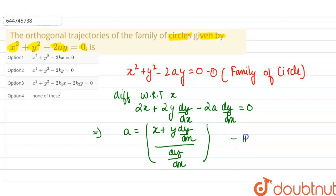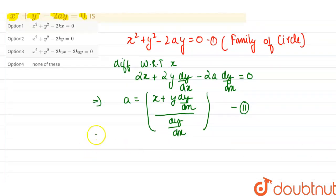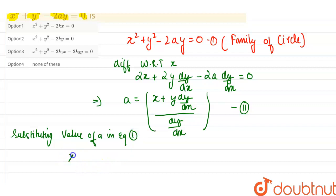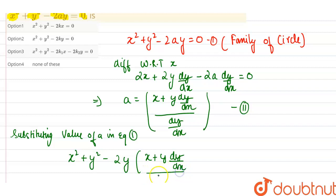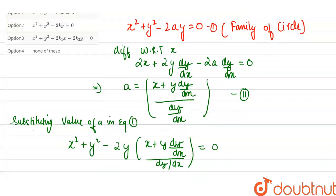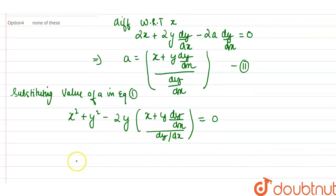Consider this to be equation number two. Now we are substituting the value of a in equation number one. Substituting the value of a, it becomes x² + y² - 2y · [(x + y·dy/dx) / (dy/dx)] = 0.